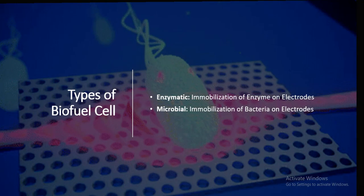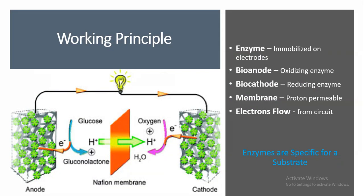Working principle of enzymatic biofuel cell: enzymes are immobilized on the electrodes. At the bio-anode there is an oxidizing enzyme which oxidizes fuel to produce electrons that move through the external circuit. At the bio-cathode, a reducing enzyme accepts these electrons and causes reduction. There may or may not be a proton-permeable membrane present, and we should know that enzymes are specific for a substrate.